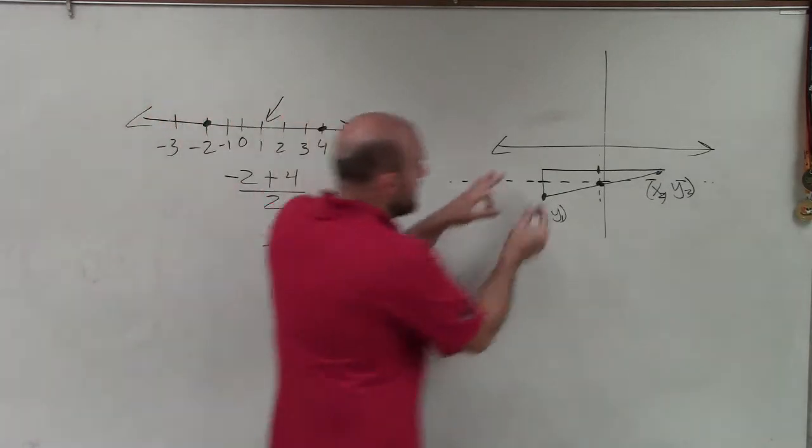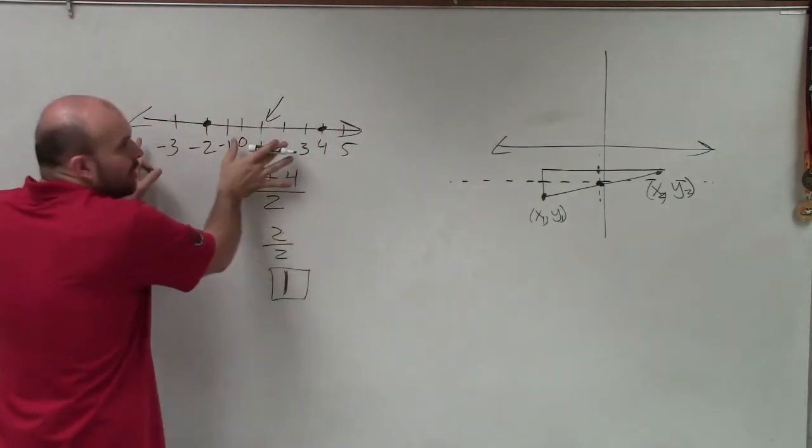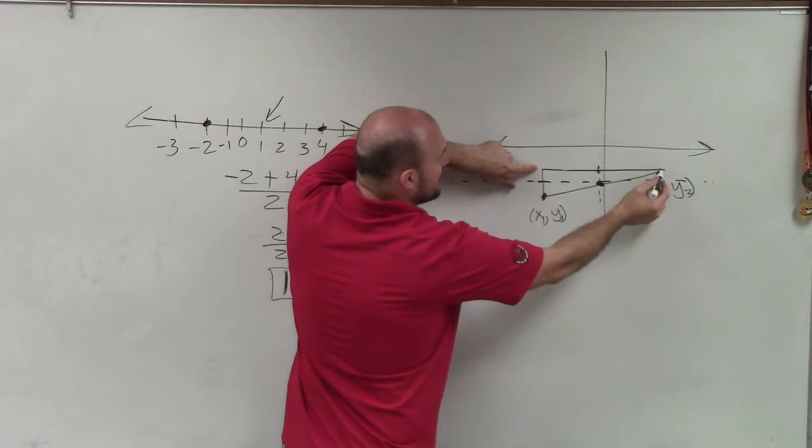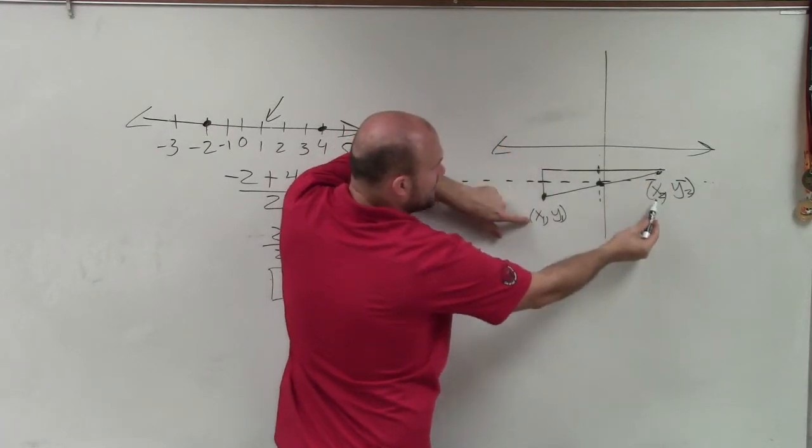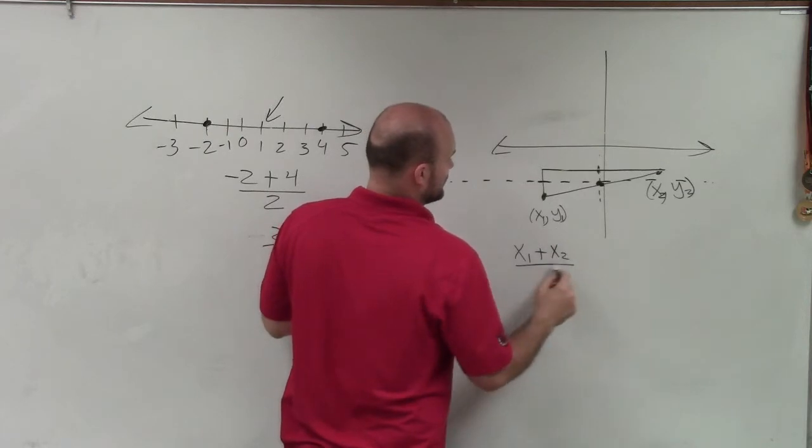Same thing with the y's - I'm going to differentiate between y1 and y2. So when we look at this, if I want to find the middle point of this line, you can see it's horizontal, like a horizontal number line. So therefore, if I want to find the middle distance of my two x coordinates, I could simply say x1 plus x2 divided by 2.